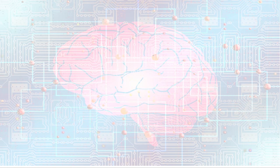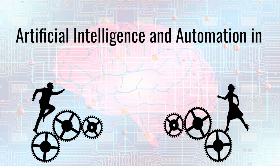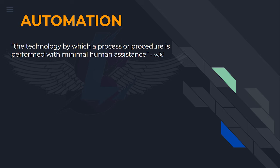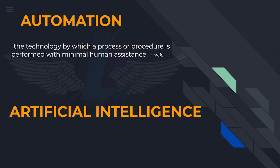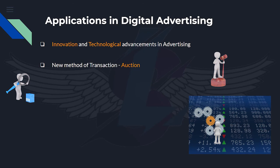In every generation, advertising methods have seen many changes. Now it is time to upgrade to the next stage: artificial intelligence and automation in marketing and digital advertising. Automation is the technology by which a process is performed with minimal human assistance; artificial intelligence means intelligence demonstrated by machines. Technology innovation in the digital advertising ecosystem introduces new methods of buying and selling, such as real-time bidding, which helps to choose wisely, identify problems in traditional methods, and improve overall efficiency at every touchpoint.